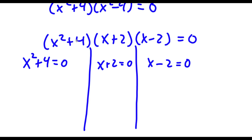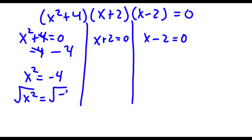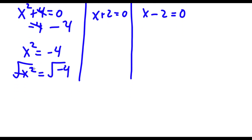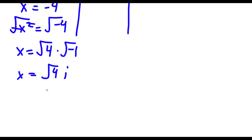For x squared plus 4 equals 0, I subtract 4 on both sides, leaving x squared equals negative 4. Taking the square root of both sides, x equals the square root of negative 4. That's the same thing as the square root of 4 times the square root of negative 1. The square root of negative 1 is i, so I have x equals the square root of 4 times i. The square root of 4 is positive or negative 2, so x equals positive or negative 2i.